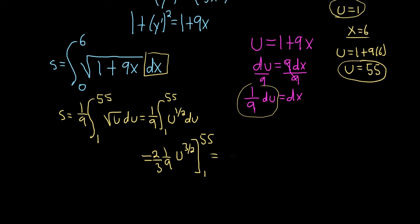So this is equal to 2 over 27, u to the 3 halves. Just taking an extra step here to clean this up, this is better this way.